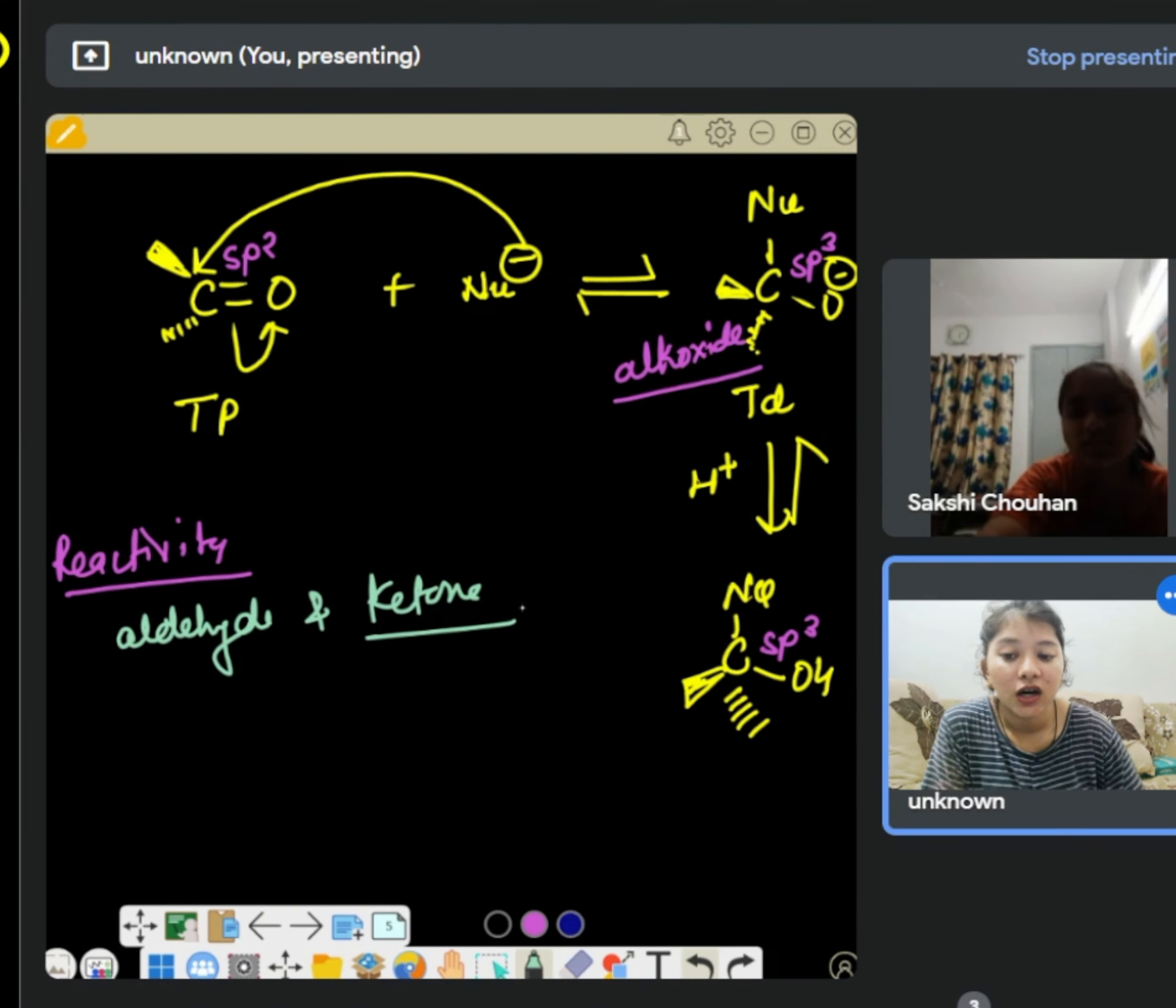Okay. So you are saying in ketone there is steric hindrance, right? So because of that ketone is less reactive. But what is the problem with the steric hindrance?